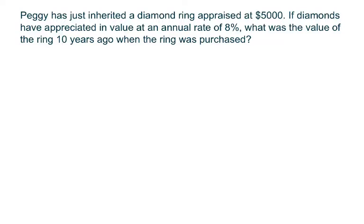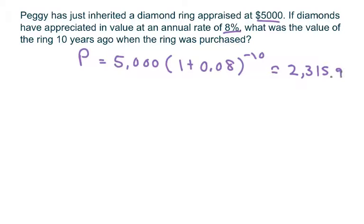And here we have another one. We have a diamond ring appraised at 5,000 now. And they appreciated in value at an annual rate of 8%. So we want to know what the ring was 10 years ago. So instead of using the formula, we're going to use A equals 5,000 times 1 plus 0.08. And we're going to use the negative 10 here. In fact, you can call this, we want to know what the principal amount was. So I'll change that to P. And when you work this out, you get 2,315.97. So that was the value of the ring 10 years ago.